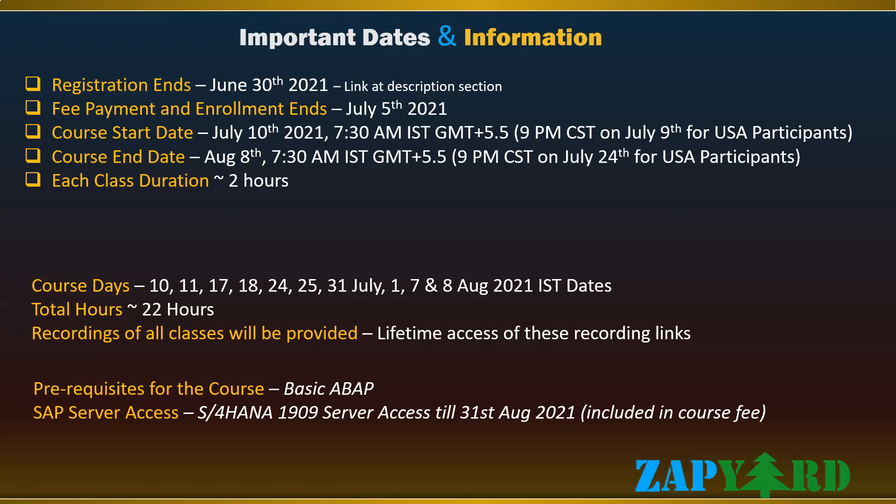The enrolment link is in the description section of this video. Each class will be just over 2 hours, and the whole course will take a little over 22 hours. Recordings will be provided after every live session, with lifetime access for participants. This course is for consultants with basic ABAP programming knowledge. We will provide an S4HANA 1909 server for all on-premise exercises, and for on-cloud exercises we will use the public ABAP on cloud space provided by SAP. Server access is included in the training fee with no extra charge, available until August 31, 2021.